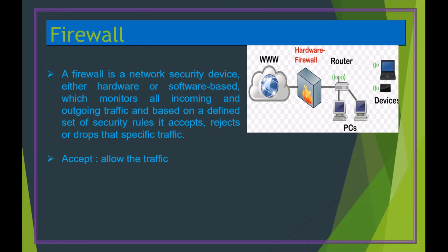A firewall is a network security device — either hardware or software based. It monitors all incoming and outgoing traffic. Just like a security guard at an office who monitors people entering and leaving to protect the organization, we use a firewall to protect sensitive or confidential data. We can create policies to allow or deny traffic. Known traffic is accepted; unknown or unauthorized traffic is rejected.